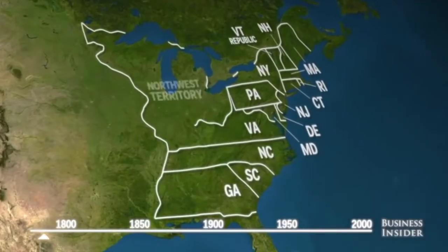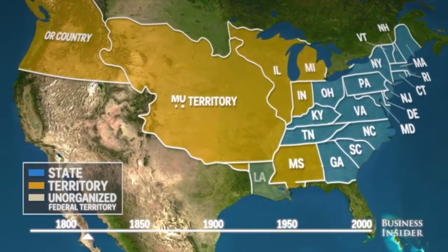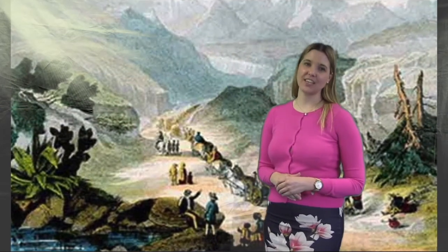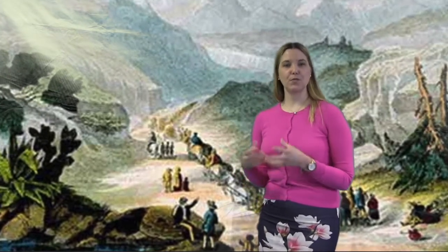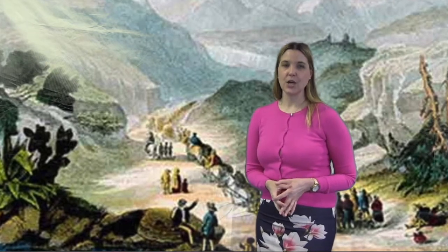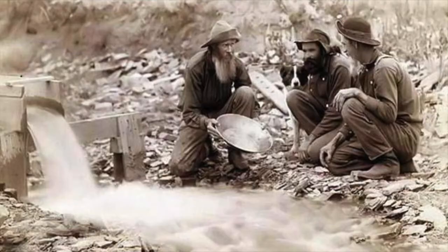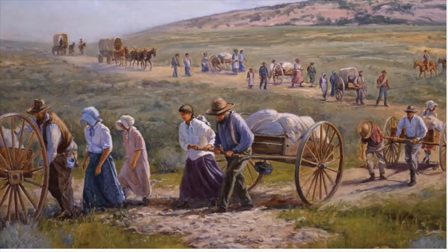Our course looks at how America transforms from the 13 original states right the way through to the 1900s. This includes looking at the lives of different groups of people. The first group is the Native Americans, who are removed from the East into the West into reservations. We then look at the Settlers — people that travel West for different reasons, whether it's to dig for gold, to escape persecution like the Mormons, or simply for those who just want a new start. The last group is the African Americans — their journey from slavery right through to being freed after the Civil War, and how their lives develop and the new opportunities they are given.